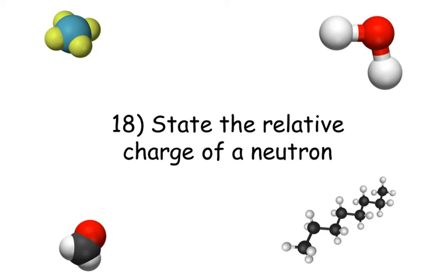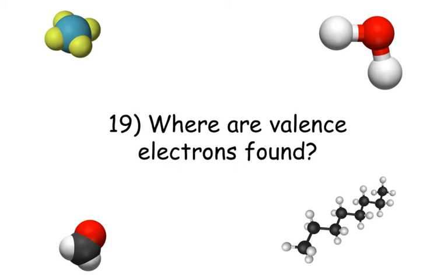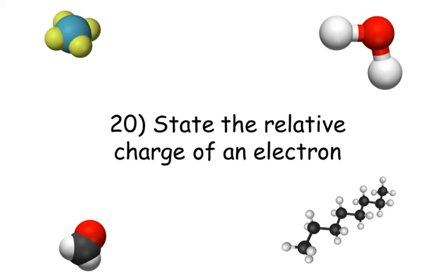Number eighteen: state the relative charge of a neutron. Number nineteen: where are valence electrons found? Number twenty: state the relative charge of an electron.